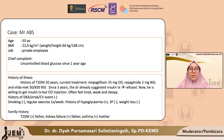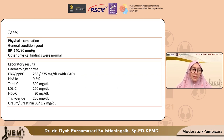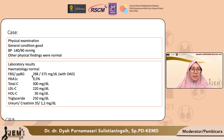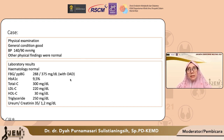Pasien pernah mengalami hipoglikemia. Di keluarga, ayah pasien menderita diabetes. Pada pemeriksaan fisik didapatkan tekanan darah 140/90. Pemeriksaan hematologi rutin dalam rentang normal, dan gula darah puasa serta gula darah 2 jam postprandial masih cukup tinggi, 288 dan 375. Pasien sudah menggunakan 4 macam OAD yang sudah disebutkan.